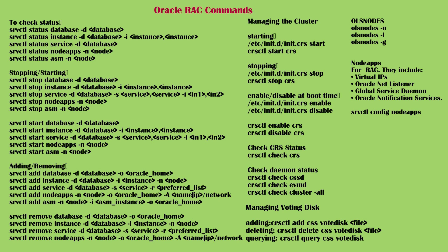Adding configuration: srvctl add database -d <database> -o <oracle_home>, srvctl add instance -d <database> -i <instance> -n <node>, srvctl add service -d <database> -s <service> -r <preferred_list>, srvctl add nodeapps -n <node> -o <oracle_home> -A <name>/ip/network, srvctl add asm -n <node> -i <asm_instance> -o <oracle_home>. Removing: srvctl remove database -d <database> -o <oracle_home>, srvctl remove instance -d <database> -i <instance> -n <node>, srvctl remove service -d <database> -s <service> -r <preferred_list>, srvctl remove nodeapps -n <node>. The allsnodes command provides the list of nodes and other information for all nodes participating in the cluster: allsnodes -n, allsnodes -l, allsnodes -g, srvctl config nodeapps.